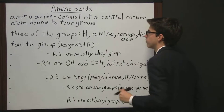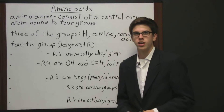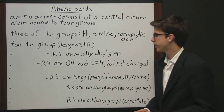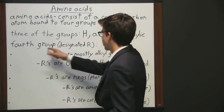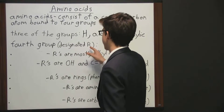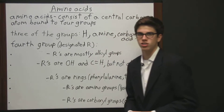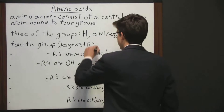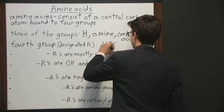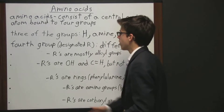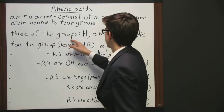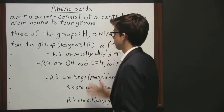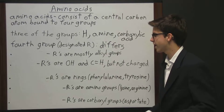It's the fourth group that is going to differ in the 20 naturally occurring amino acids, and this fourth group is also called the R group. R basically just stands for any type of chemical chain. Although three of the groups are the same for every amino acid, the fourth group differs from amino acid to amino acid.